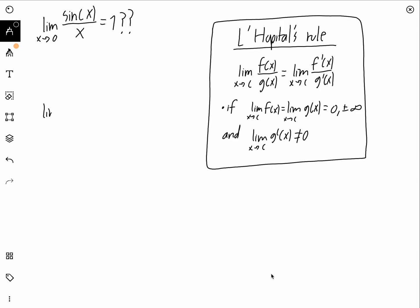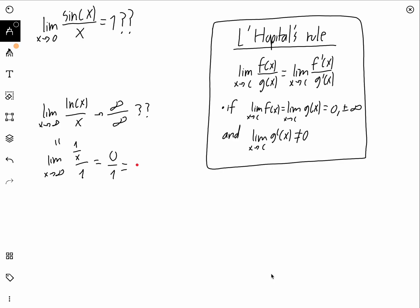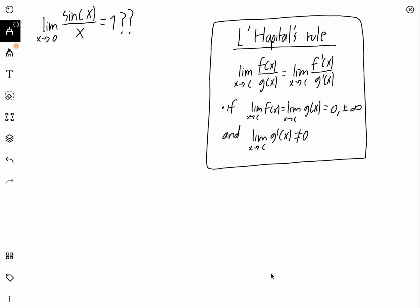For example, the limit as x goes to infinity of ln(x) over x gives infinity over infinity — an indeterminate form. Applying L'Hôpital's rule, we take derivatives: the derivative of ln(x) is 1/x, and the derivative of x is 1. As x goes to infinity, 1/x goes to zero, so the limit equals zero. This makes sense because ln(x) grows much slower than x.